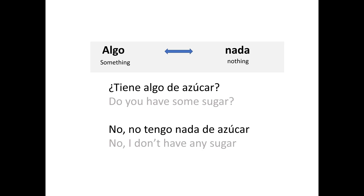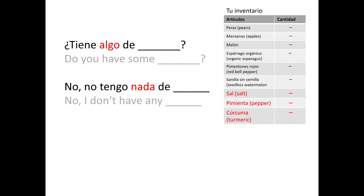No, no tengo nada de azúcar. Now let's practice. I made you an inventory of a store, and as you can see, those are the things that your store doesn't have any of. At the bottom, I highlighted in red the ones you can't really count because they're spices like salt, pepper, or turmeric. So because we can't count them, we're going to ask: ¿Tiene algo de sal? No, no tengo nada de sal.